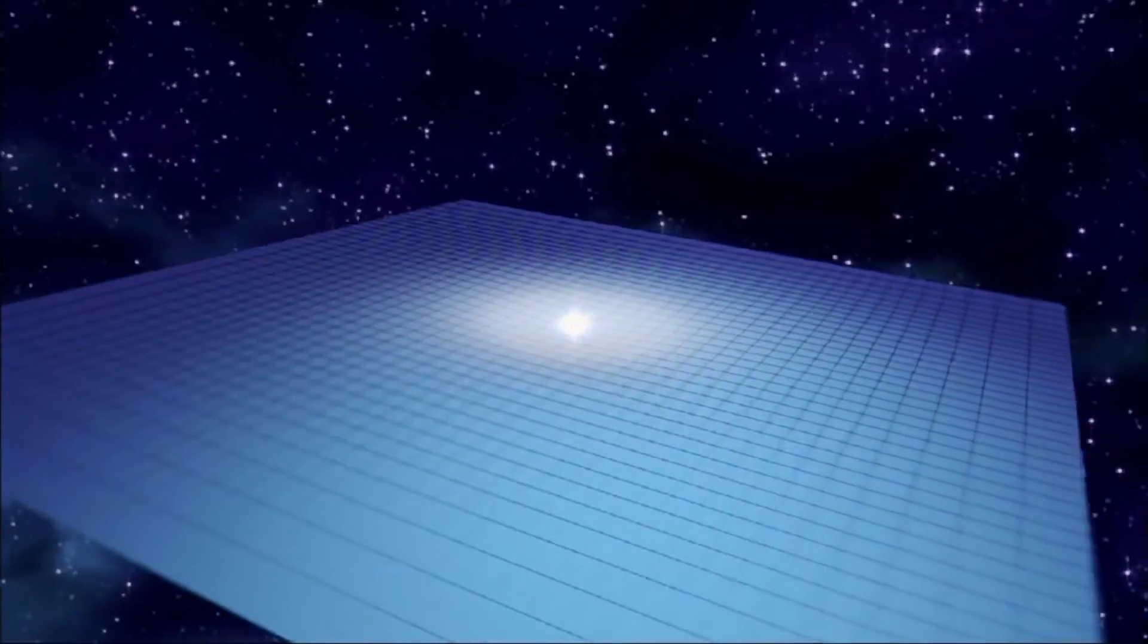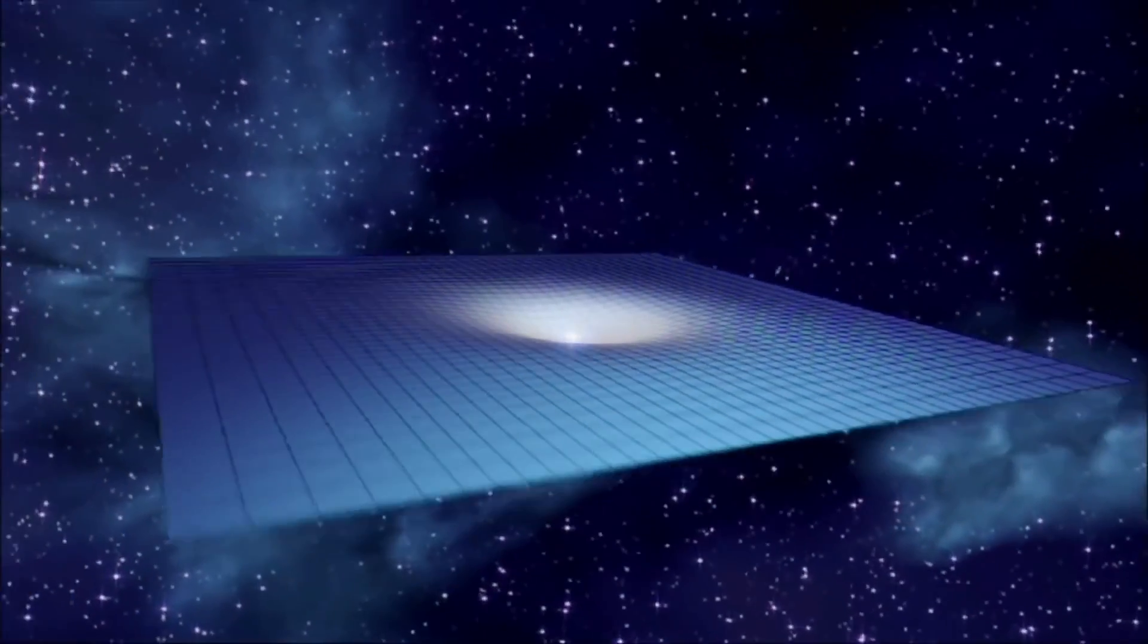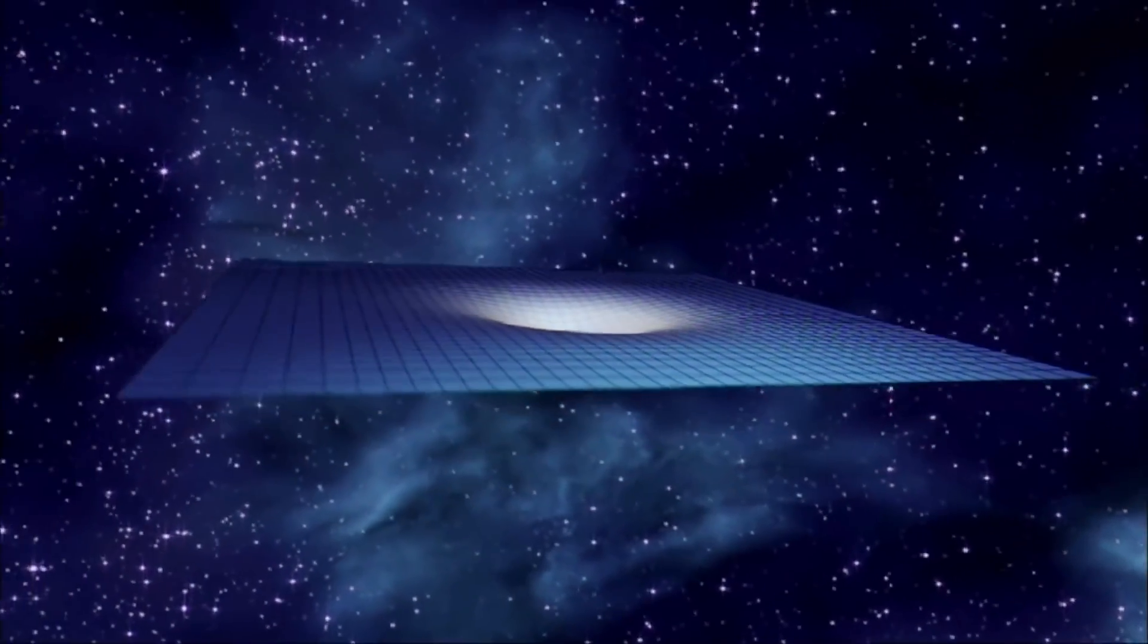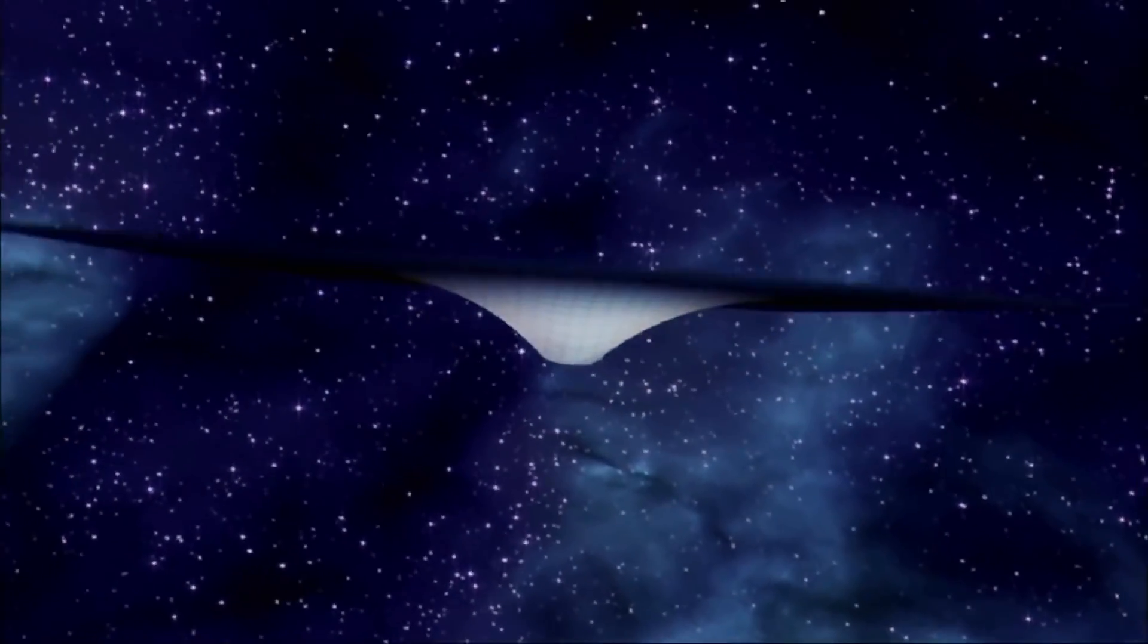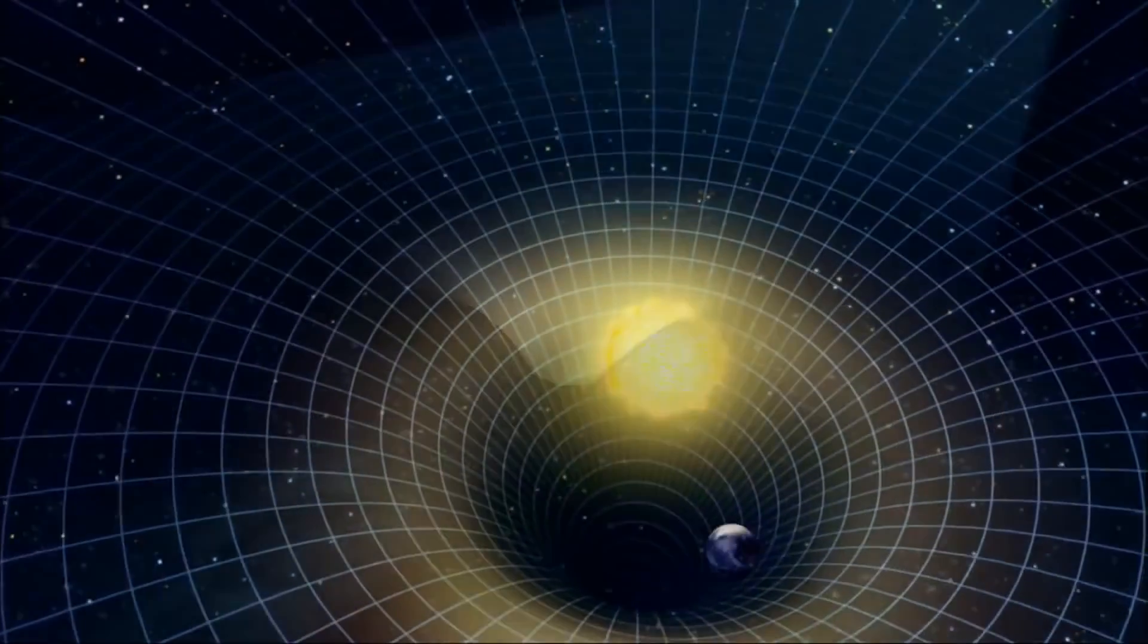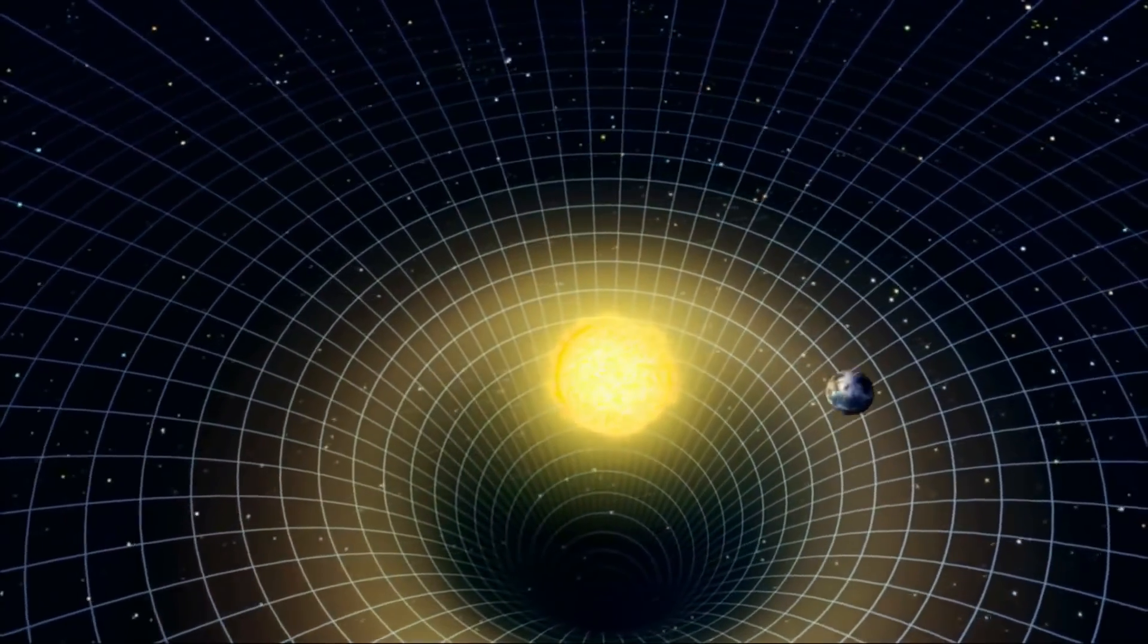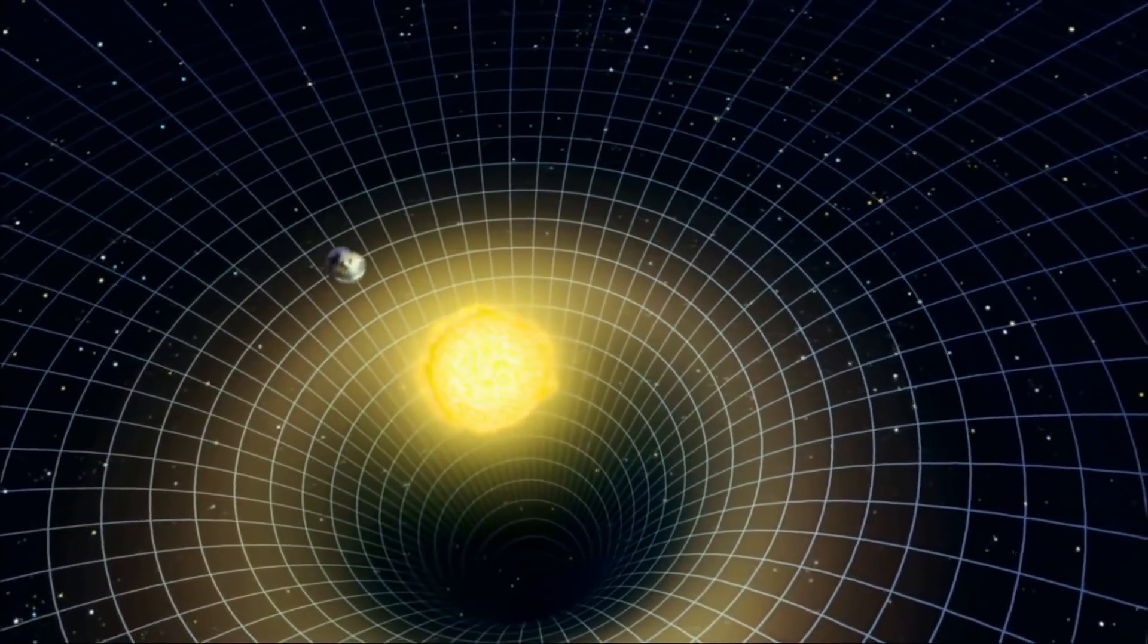With his general theory of relativity, Einstein showed that a massive object, like a planet, a star, or black hole, actually warps the fabric of space and time. In fact, Einstein believed that gravity, the force that binds us to the Earth and keeps the Earth in orbit around the sun, is really just an effect of this warping.